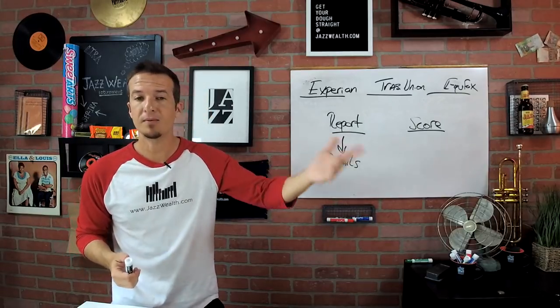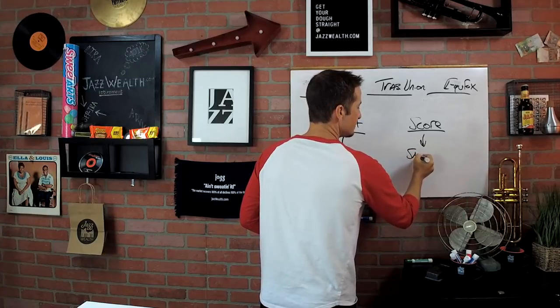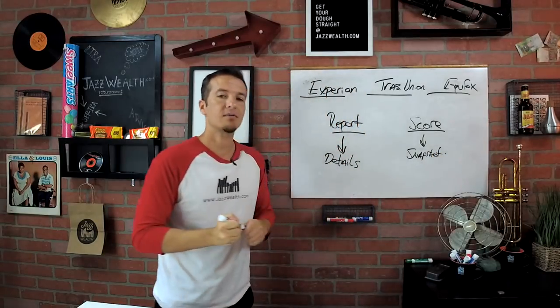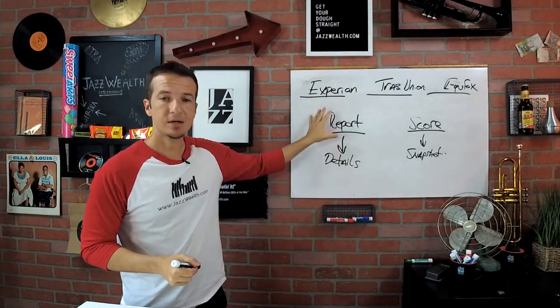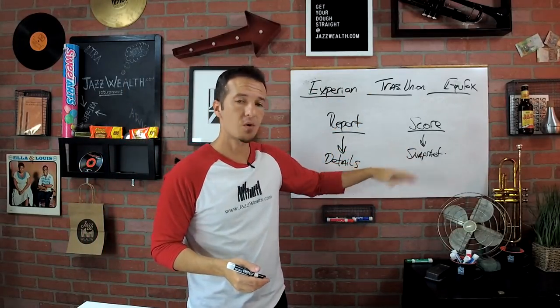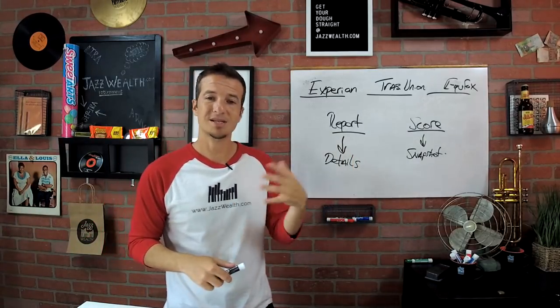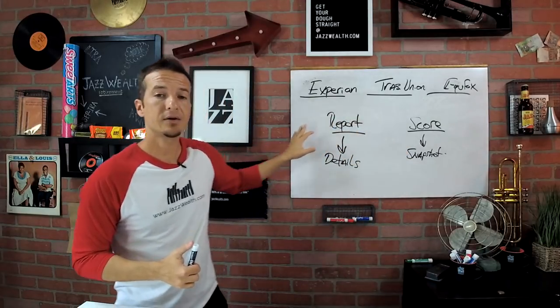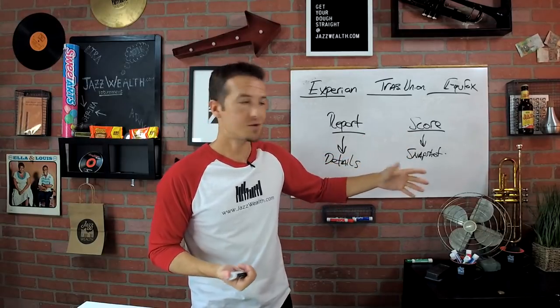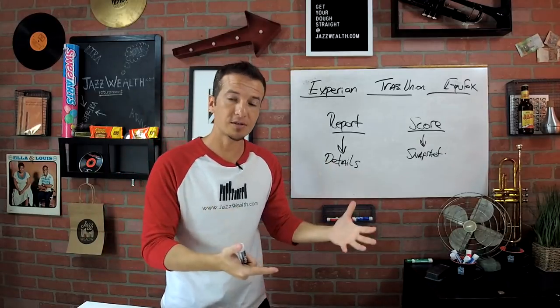Even past credit cards you had that you canceled or closed, all in there. Now over here, this is just a snapshot. This is how you handle your credit. So this tells you all the details and over here is just one number. Your FICO score is just one number that lets everybody know where we're at on the same playing field. So if it's a 750, we know that you do pretty good at handling your credit. If it's like a 510, we know you've got some work to do.